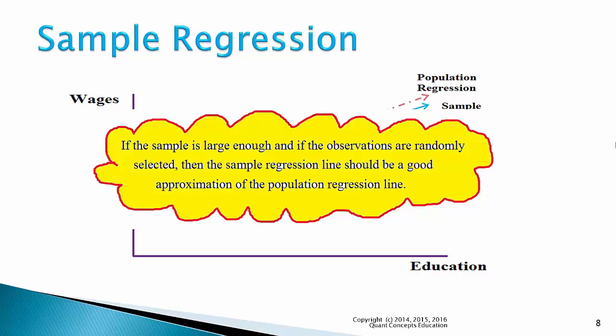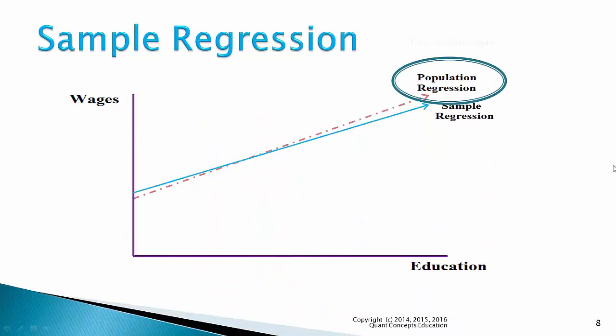This is similar to how, in our previous lectures, we used the sample mean as an approximation of the population mean. The population regression is a true relationship between wages and education, whereas the sample regression is only a sample estimate of that relationship.